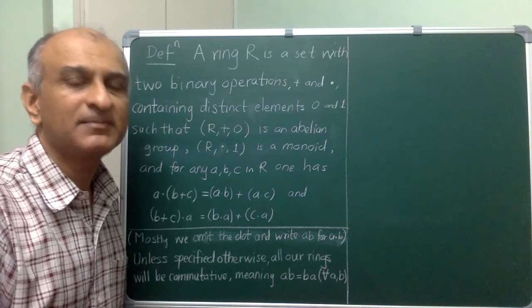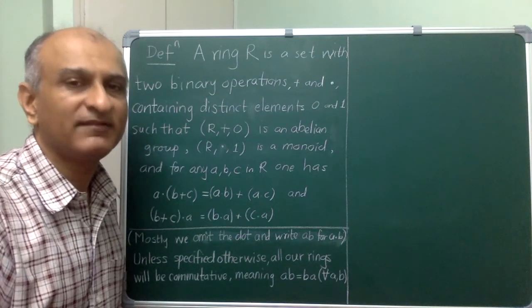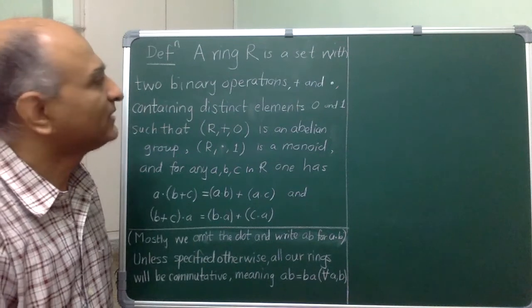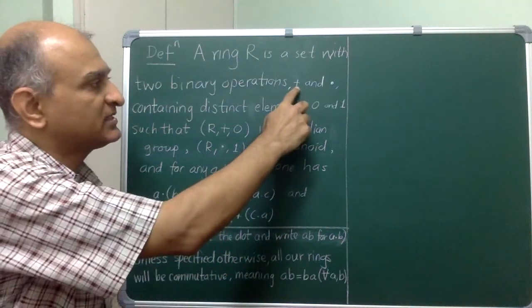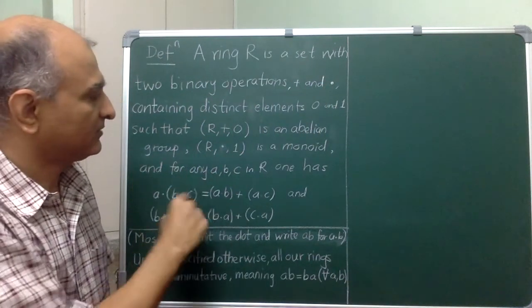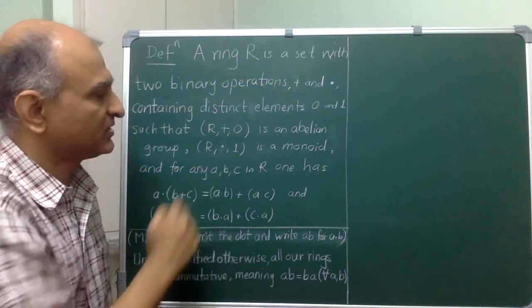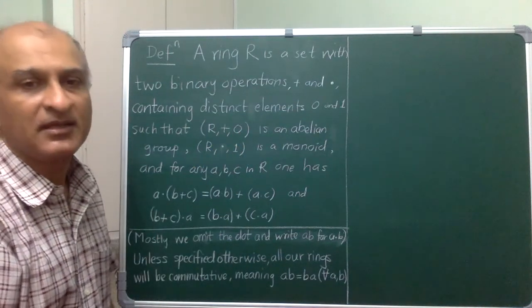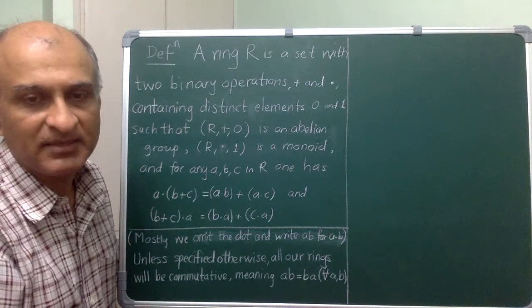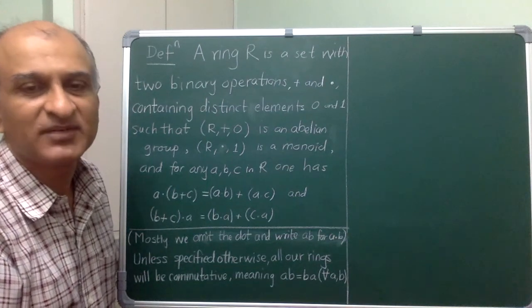So, informally we know that a ring is a place where you can add, subtract and multiply but it is important to know the formal definition. So, here it is. A ring is first of all a set and you have two binary operations defined on it. This is one that we call addition and multiplication in such a way that R under the operation plus is an abelian group with the neutral element 0. So, what that means is that addition is associative, addition is commutative and every element has an additive inverse. The additive inverse of a is always denoted by minus a as usual.